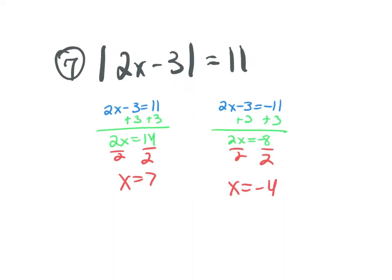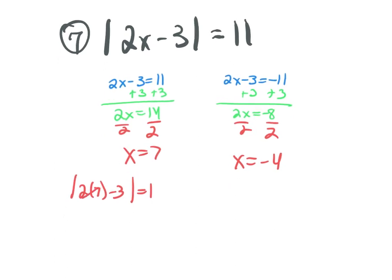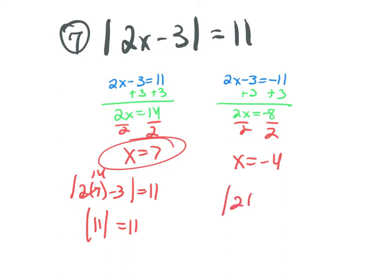Let's check. Absolute value of 2 times 7 minus 3: 14 minus 3 is absolute value of 11, which equals 11. Yes. For x equals negative 4: 2 times negative 4 minus 3 is negative 8 minus 3, which is negative 11. Is the absolute value of negative 11 the same as positive 11? Yes, it is.